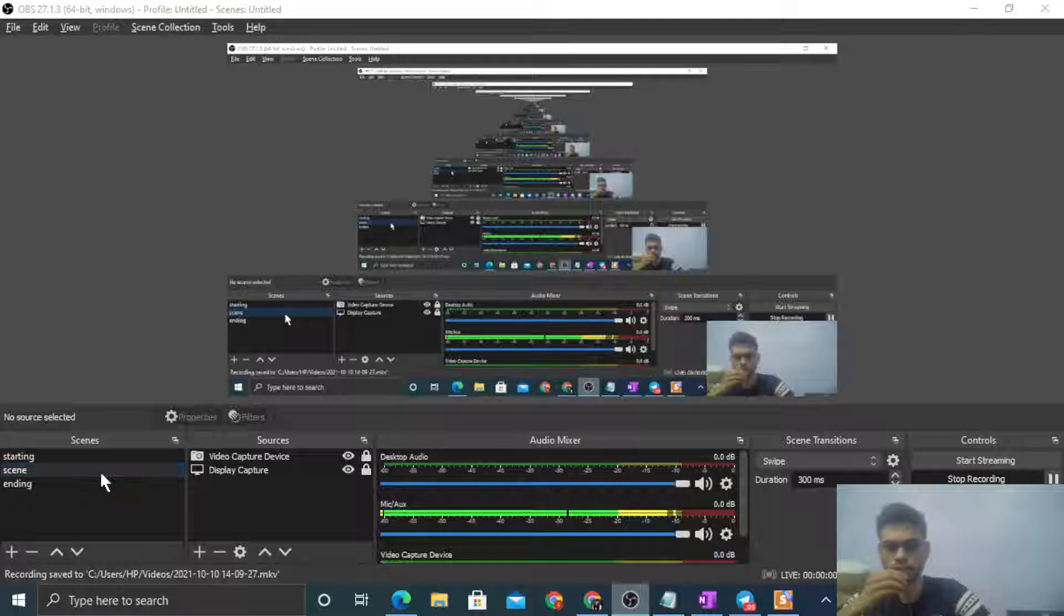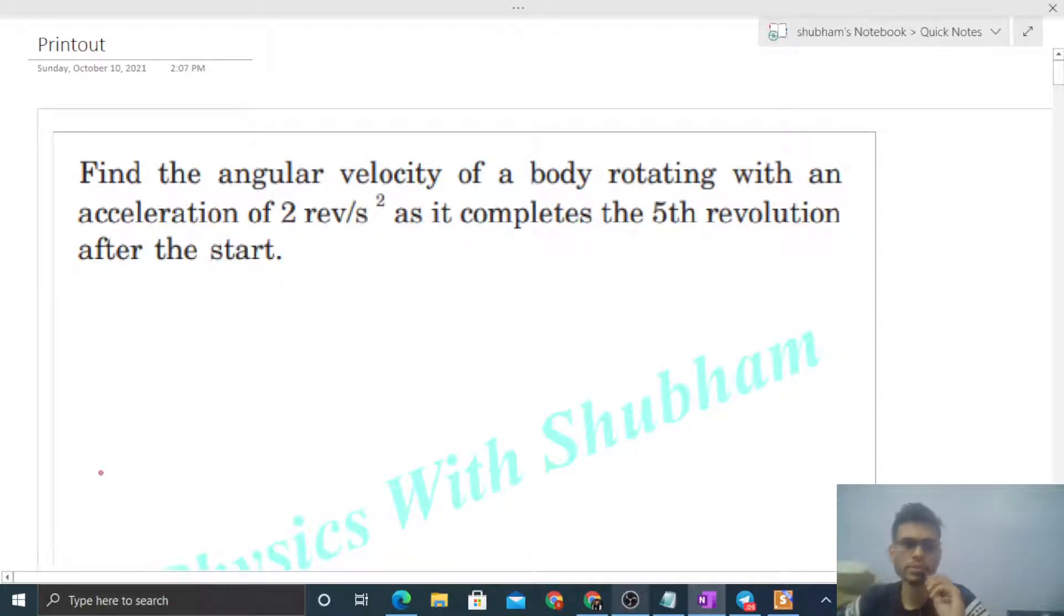Okay hi everyone, today let's discuss this interesting problem. It says find the angular velocity of a body rotating with an acceleration of 2 revolutions per second square as it completes the fifth revolution after the start.